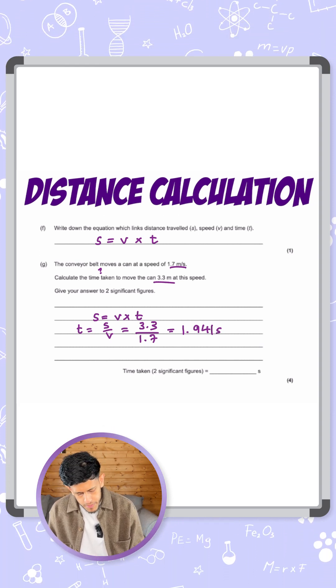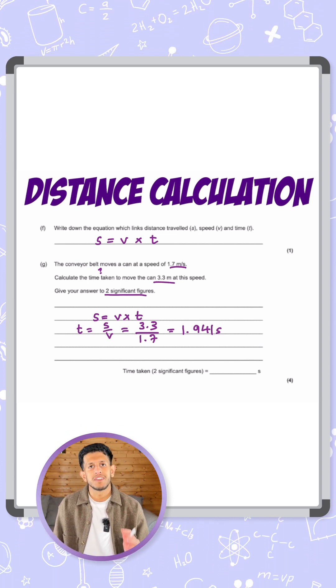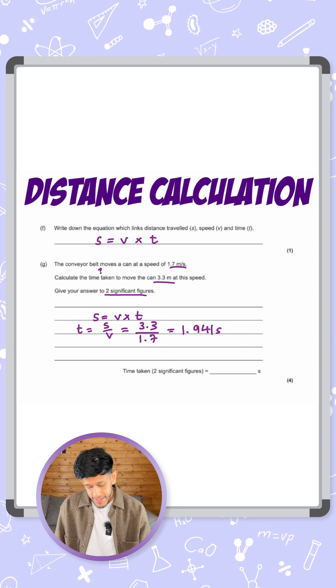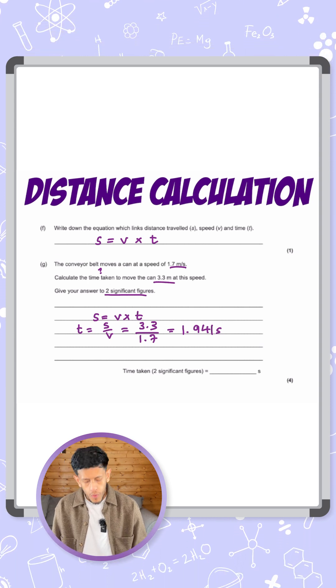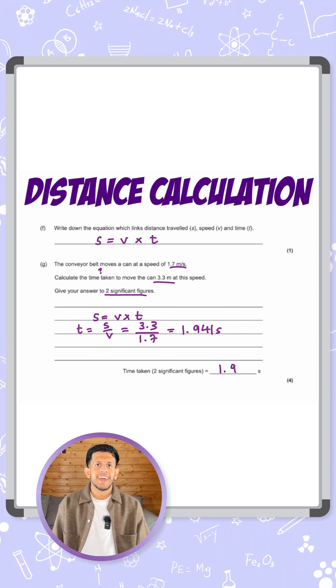Give your answer to two significant figures. If you don't follow this, you do lose this mark, so it's an easy mark to get—make sure you don't miss it out. So 1.941 to two significant figures is just the first two numbers there, so 1.9, and there you have it.